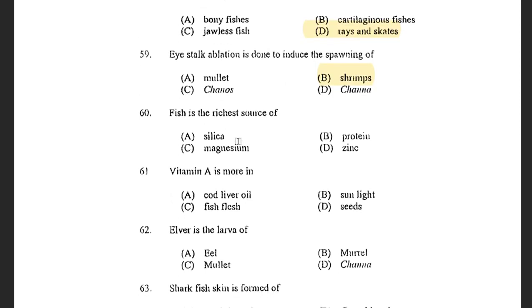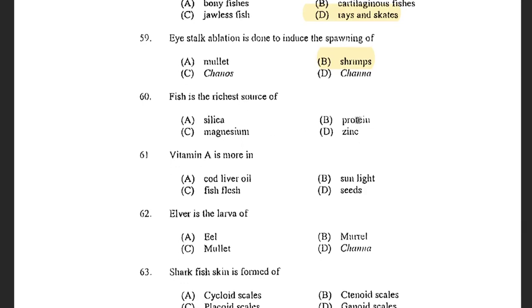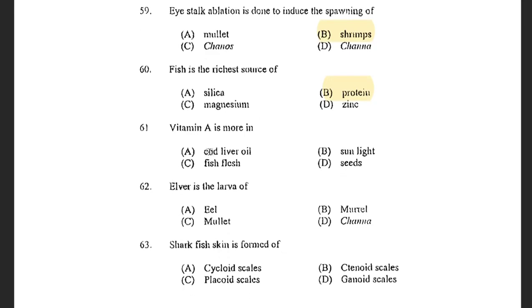Next question: Fish is the richest source of — options are Silica, Protein, Magnesium, and Zinc. The answer is Protein. Next question: Vitamin A is more in — options are Cod Liver Oil, Sunlight, Fresh Flesh, and Eggs. The answer is Cod Liver Oil.